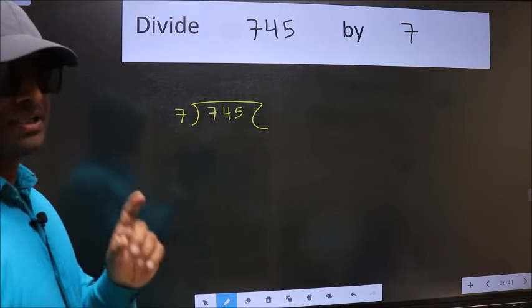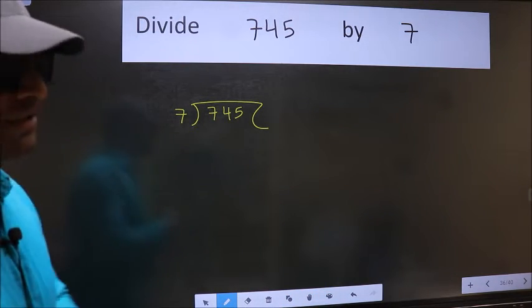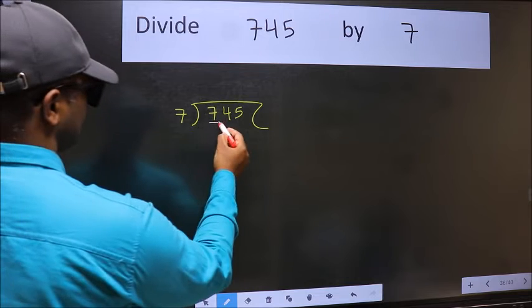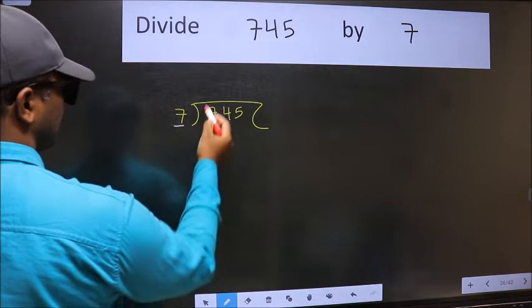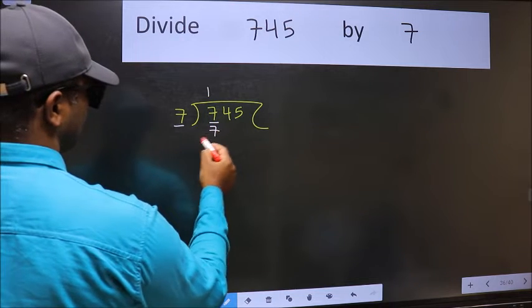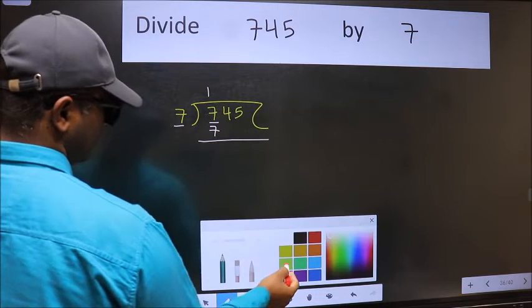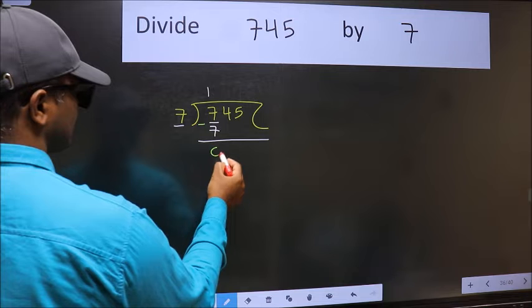This is step 1. Here we have 7 and here 7. When do we get 7 in the 7 table? 7 times 1 is 7. Now we subtract and get 0.